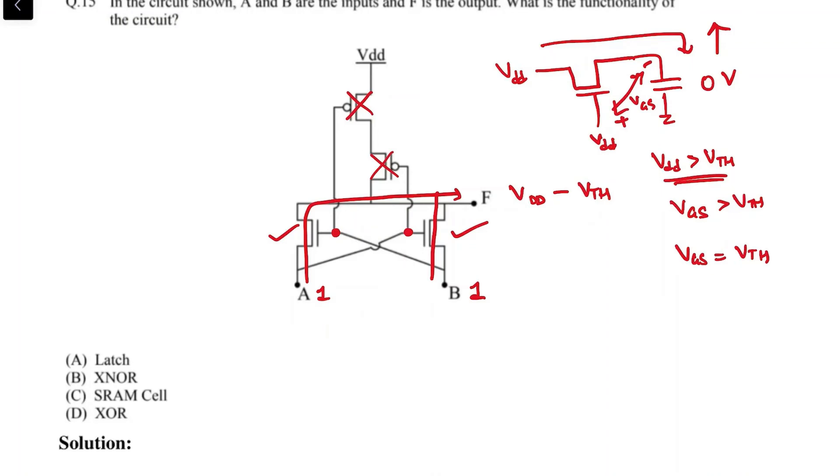When will this happen? The gate is at VDD, so VDD minus Vs is equal to Vth. This will happen when Vs is equal to VDD minus Vth. So in this situation, the output will rise up to VDD minus Vth.